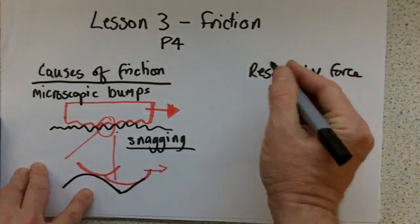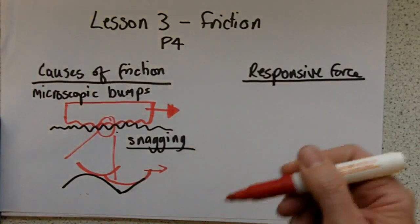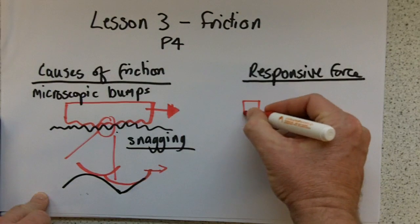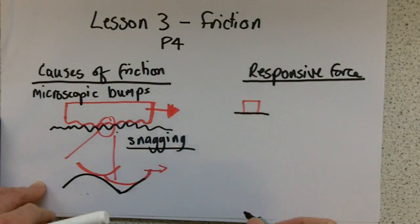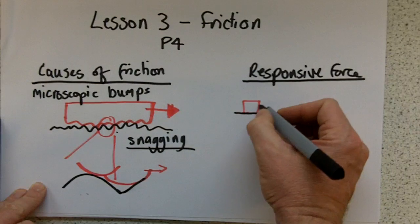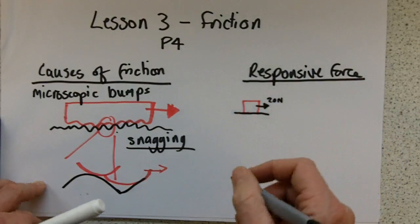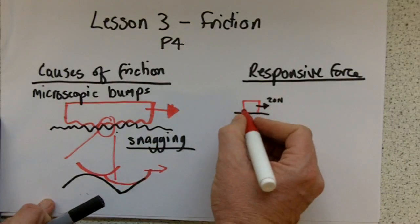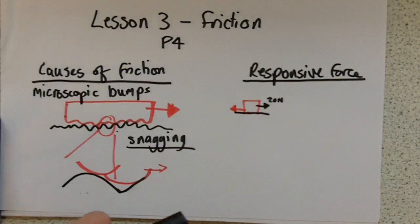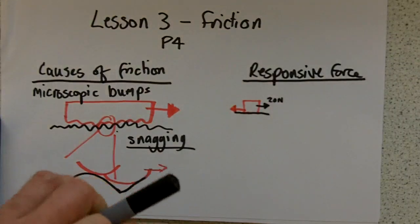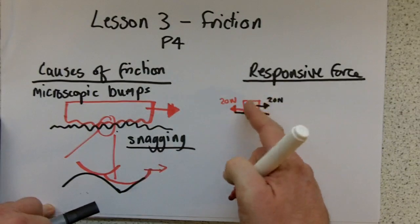Now friction is what's known as a responsive force. So if I try to push my box, or pull my box along my surface, then this is what happens. So here's my box. Now if I apply a force of, say, 20 Newtons, I might find that the size of the friction force will be exactly the same as that, 20 Newtons, and the object won't move, the forces are balanced.